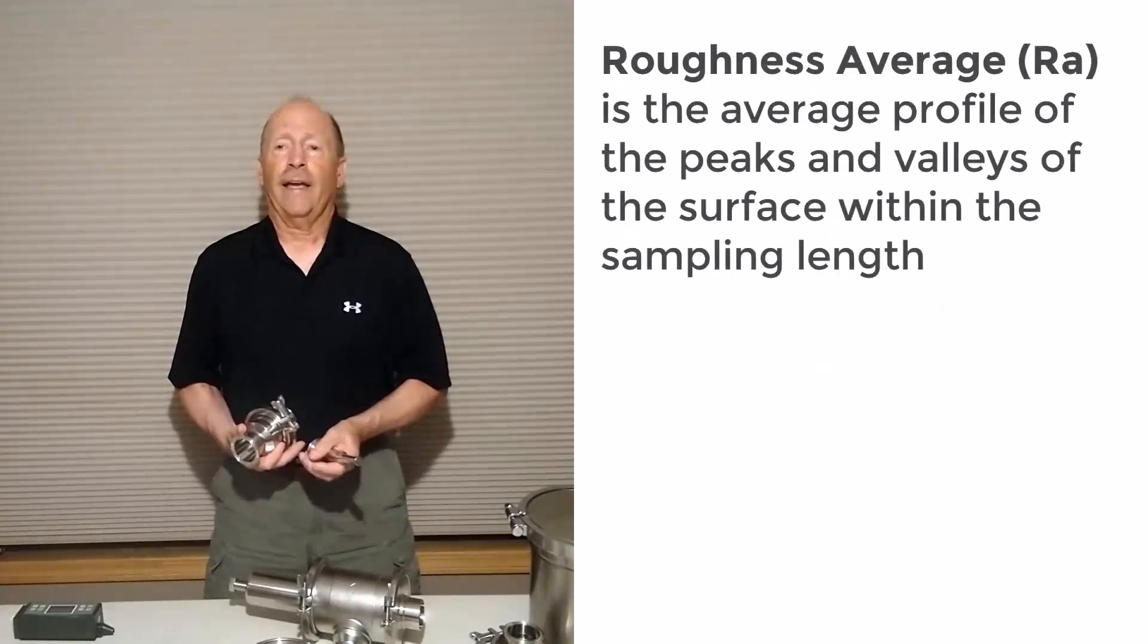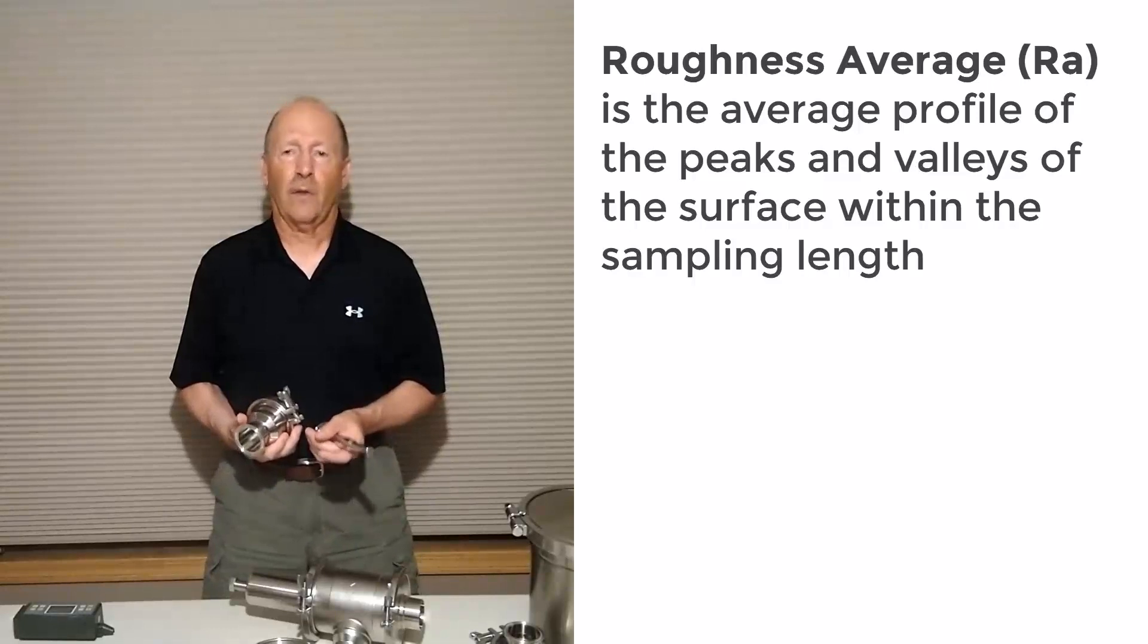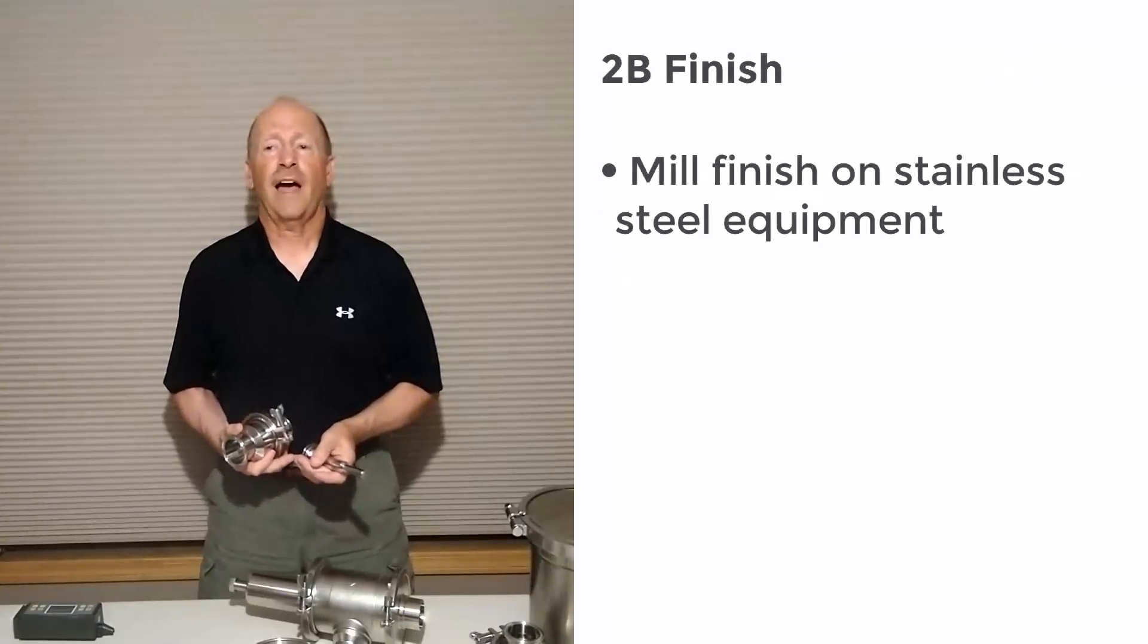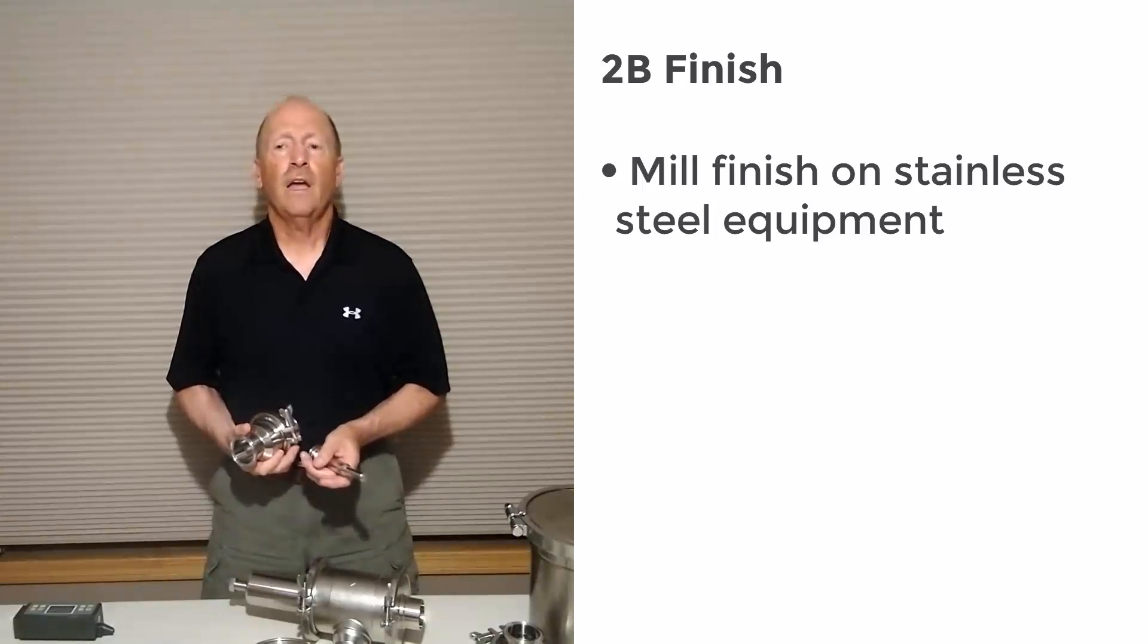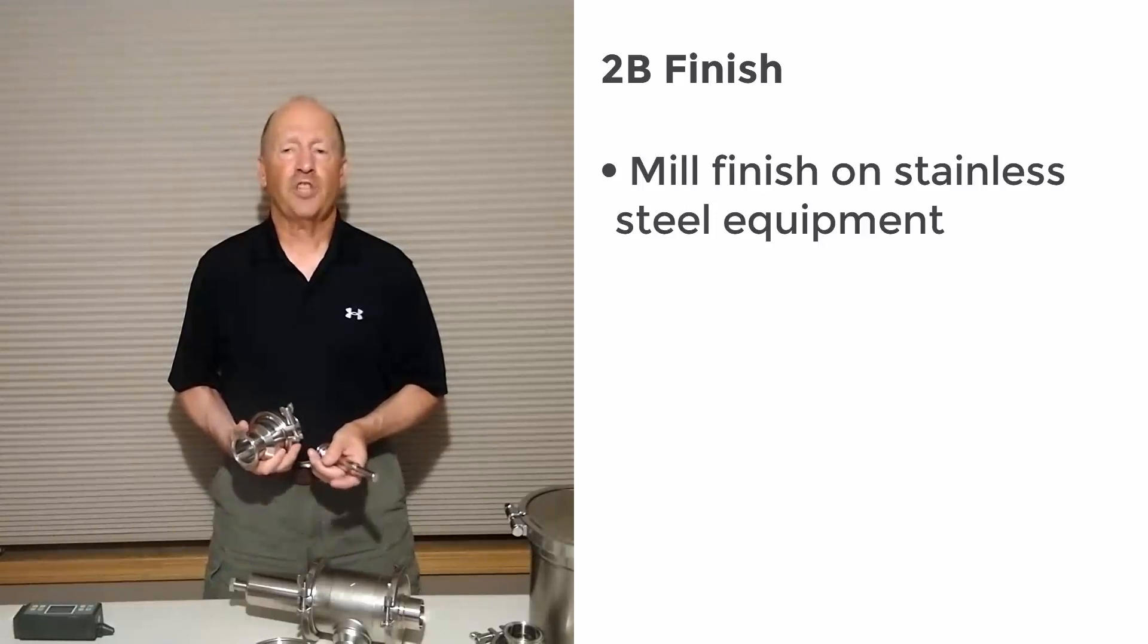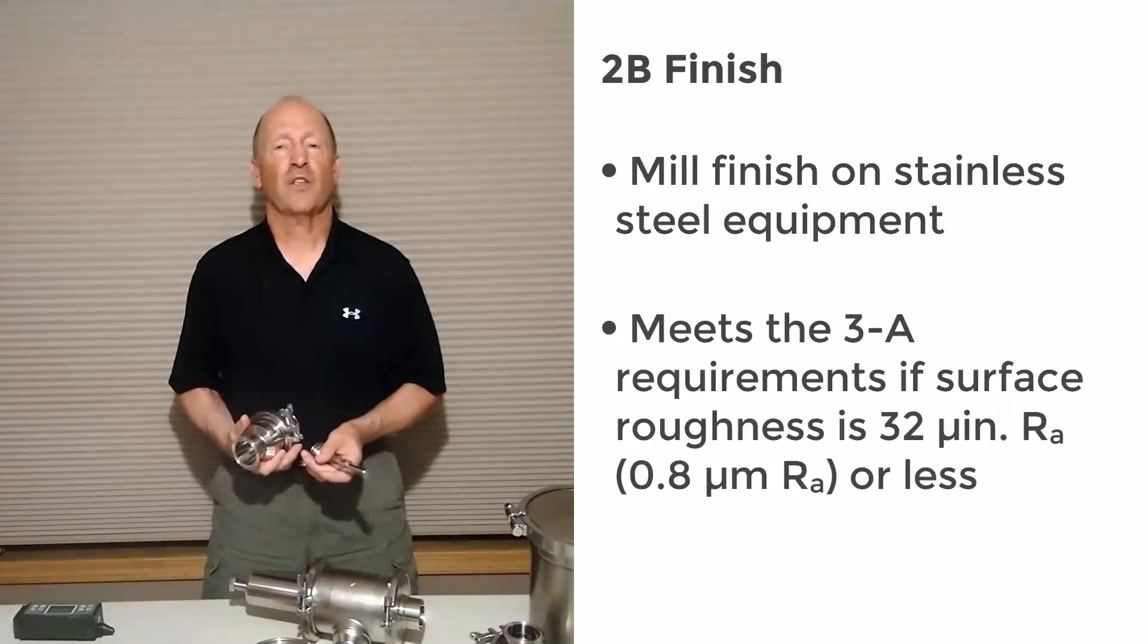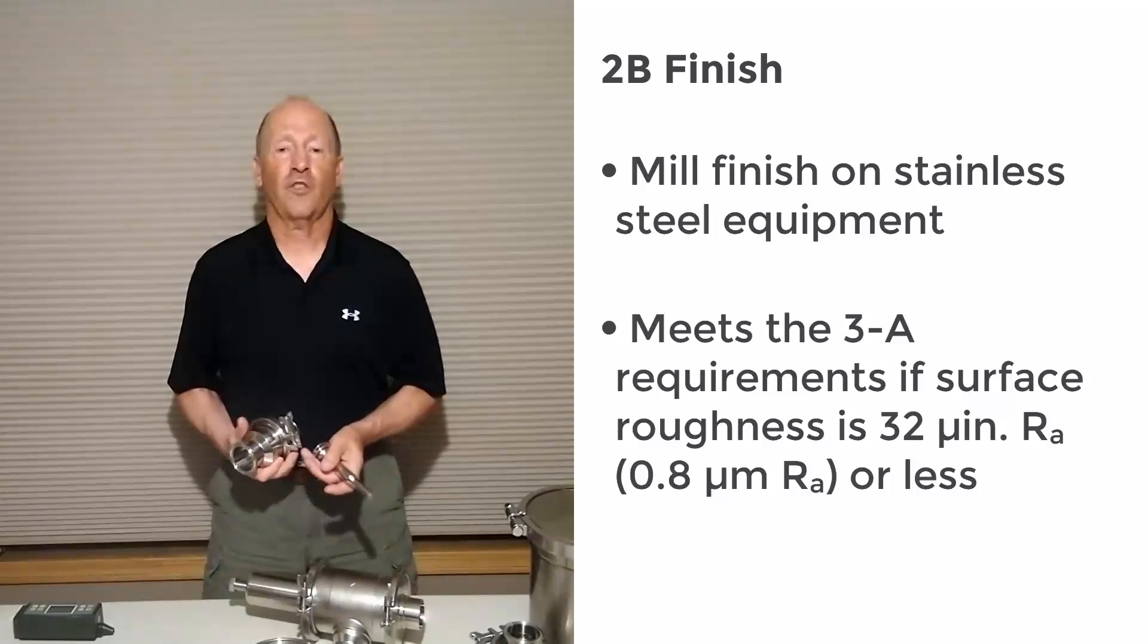Roughness average, the RA, is the average profile of the peaks and valleys of the surface within a sampling length, typically one quarter inch or 6.4 millimeter. A 2B finish is the mill finish on stainless steel equipment achieved by cold rolling, heat treating, and pickling along with the application of a light rolling to achieve a smooth and reflective sheen. 2B finishes meet the requirements of the 3A standards if they have the surface roughness measured less than 32 micro inch or 0.8 micron RA and are free of pit scratches and other defects.